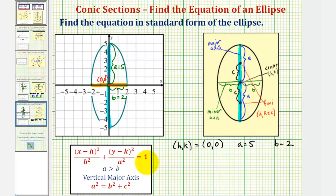And therefore, the standard form of the equation for our ellipse would be X squared, again since H is zero, divided by B squared, which would be two squared or four, plus Y squared, because K is zero, divided by A squared, which would be five squared or twenty-five, equals one.